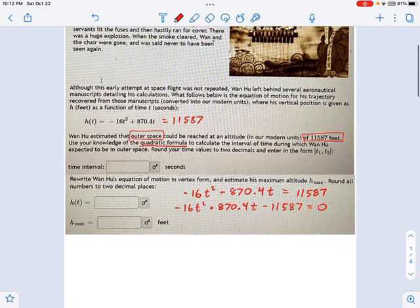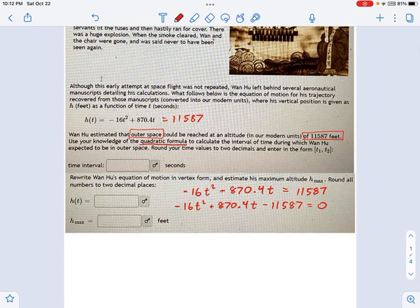For this problem, we're going to use the quadratic formula, not because you can't factor it any other way, but because this is one of those cases where it's actually nicer. So let's think about what I have. A equals negative 16, B equals 870.4, and C equals negative 11,587.